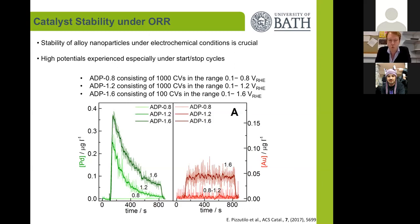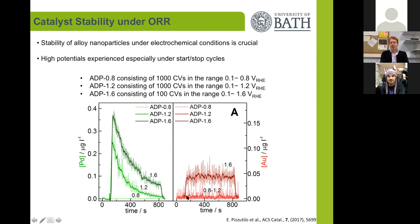This was worked on in collaboration with the Max Planck Institute in Düsseldorf. We have traces for the leached amounts of palladium and gold. When cycling the system to around 0.8 V, we're not getting any leaching of palladium or gold. When we go to 1.2 V, only palladium is leaching from the particles. And when we go up to 1.6 V, we see palladium and gold both start to leach from these nanoparticles.